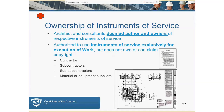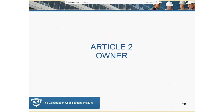Ownership of instruments: the architect owns the documents unless it's spelled out differently within the contract. This is unique to the AIA documents. Most other documents — especially owner-written ones — the owners claim ownership. If you get supplemental conditions or an owner using a different form, it's a good idea to compare it to the A-201 so you know the differences as you're performing the work.